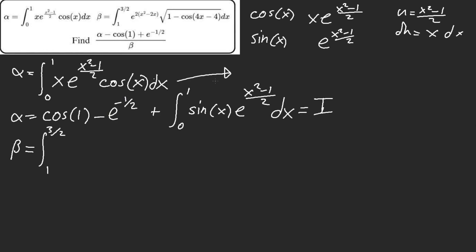If this was an actual integration bee, I'd most likely not be able to solve this in time — this would stump me. So I want to complete the square for that. I want to do plus one minus one, so I get (x-1)². Let u equal x minus one. You see how suspicious that is — I'm going to do that. I already know where this is going.